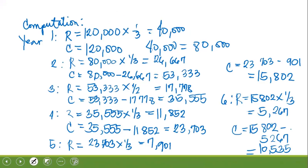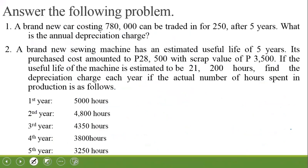That is how to compute using the double declining balance method. For your activity requirements this week, answer the following problems — there are seven problems in total.